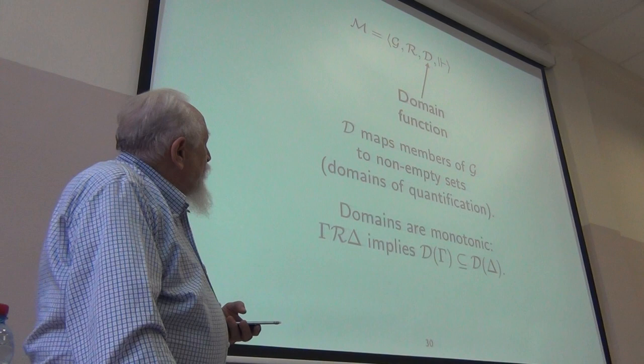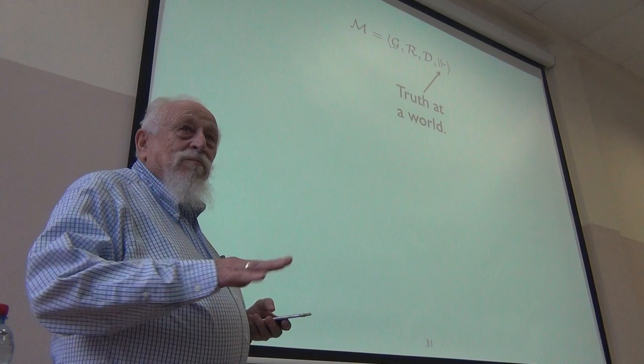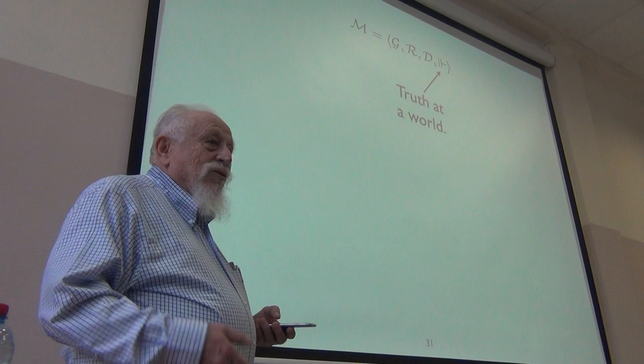The rest of this is the same. Forcing, the truth at a world condition is arbitrary. That's part of your definition of a model. Beyond that, you calculate truth at worlds. Boolean connectives behave in the usual fashion at each world.